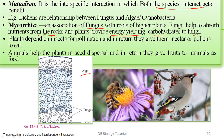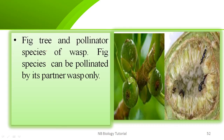The third example: plants depend on insects for pollination; in return they give nectar or pollen to eat. The fourth example: animals help plants in seed dispersal; in return plants give fruit to animals as food. The fifth example is the fig tree — the fig species can only be pollinated by its partner wasp species.